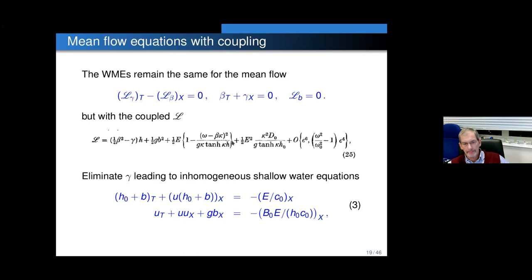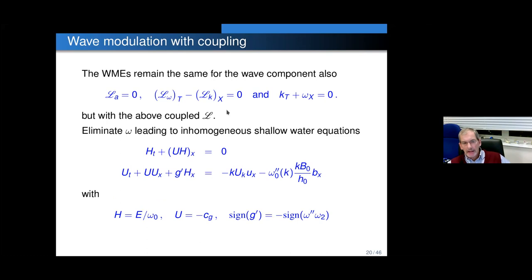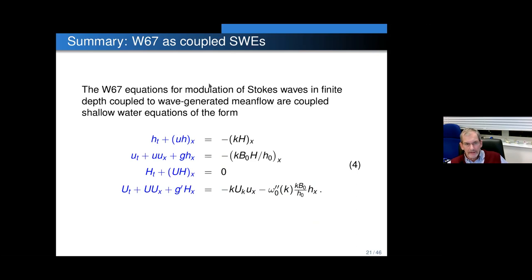Now let's do the same thing with the wave modulation. Skipping a few steps — we know to eliminate omega, so the left hand side will be the shallow water equations, and the right hand side is now the modulation of the mean flow. G prime shows up here, but G prime no longer has the significance it has for the single phase case — it will not determine stability or characteristic type, because effectively everything is coupled now. To summarize: the W67 equations for modulation of Stokes waves in finite depth are coupled shallow water equations. The mean flow has the same form as the wave, and they're coupled — it's interesting that the wave component affects the conservation of mass of the uniform flow.